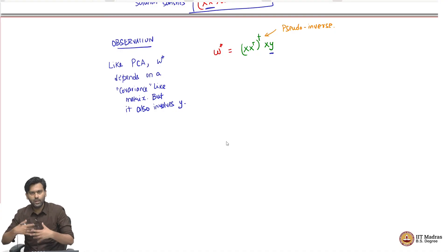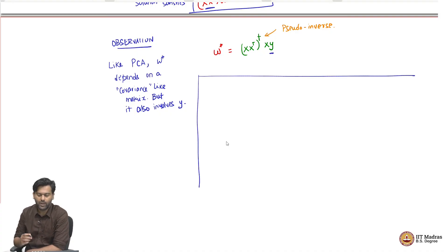I can compute W star in closed form solution. It might be computationally expensive and so on. We will talk about that in a minute, but for now, it looks like I can see this and say that this is my W star. The W star is a function of the data and the labels, XX transpose pseudo inverse X into Y. It looks like a closed form, but then we need to make sense of it. One observation is that there is some covariance matrix involved and so on, but that is not the complete picture. We need to understand, make sense of this in a better way. How can we make sense of it?